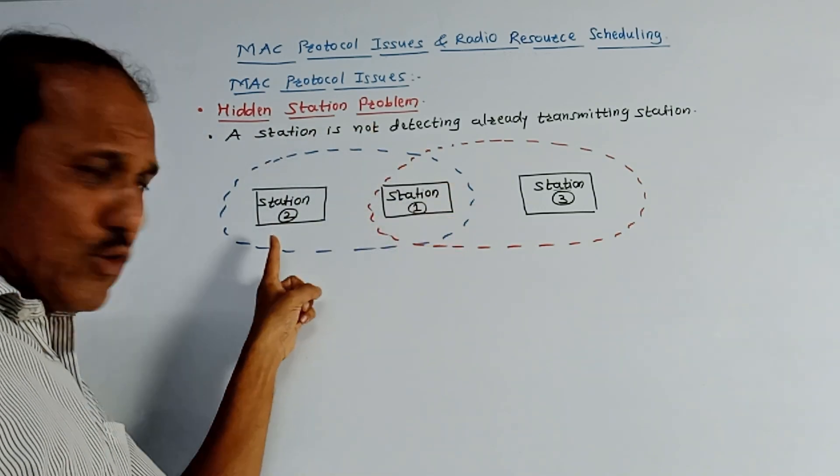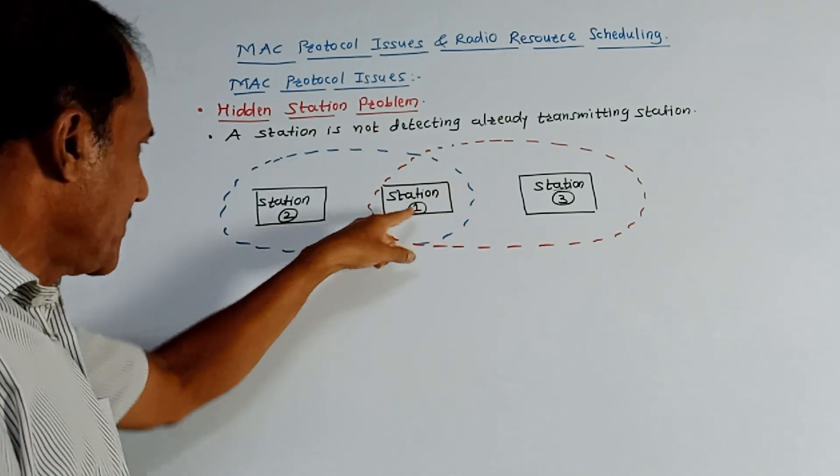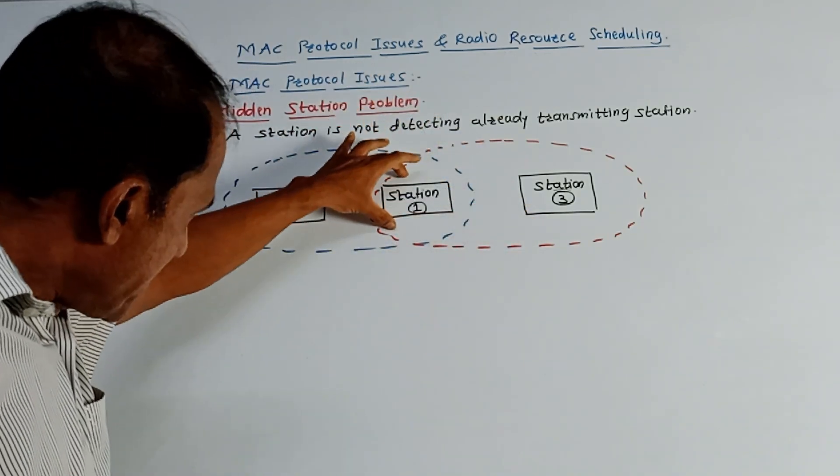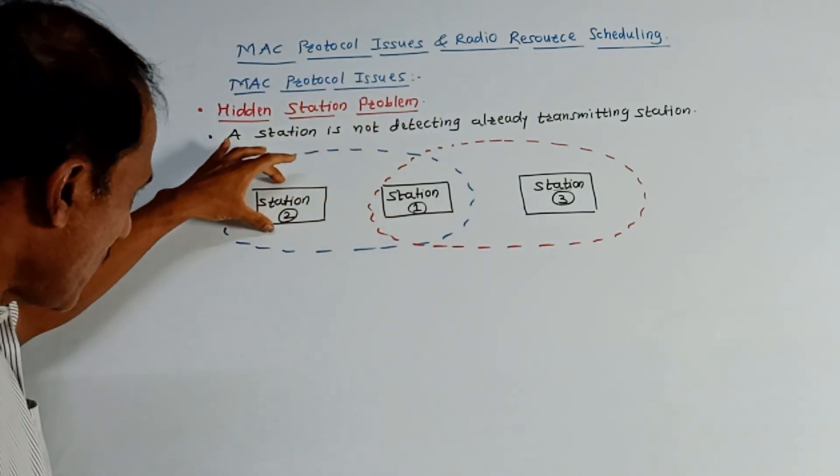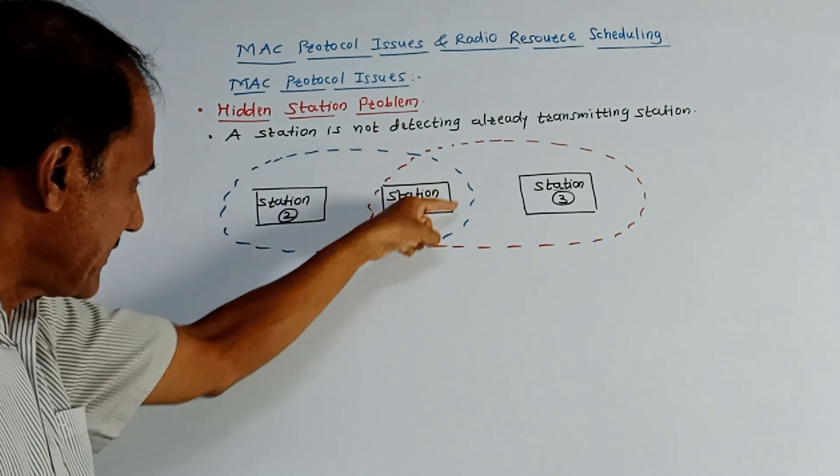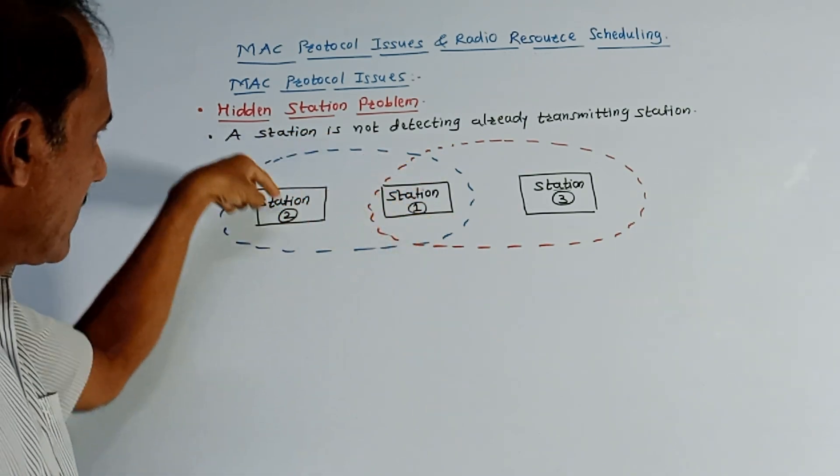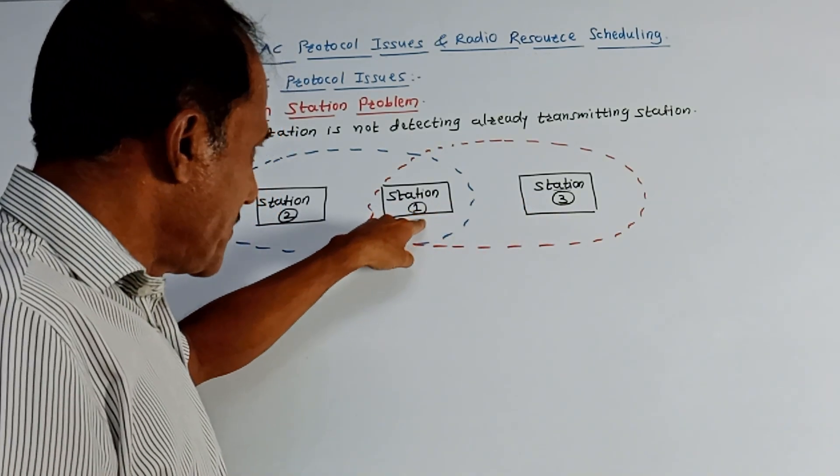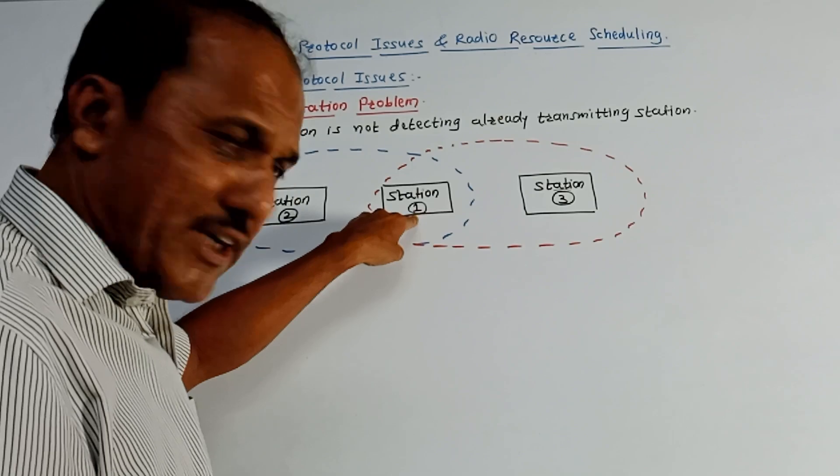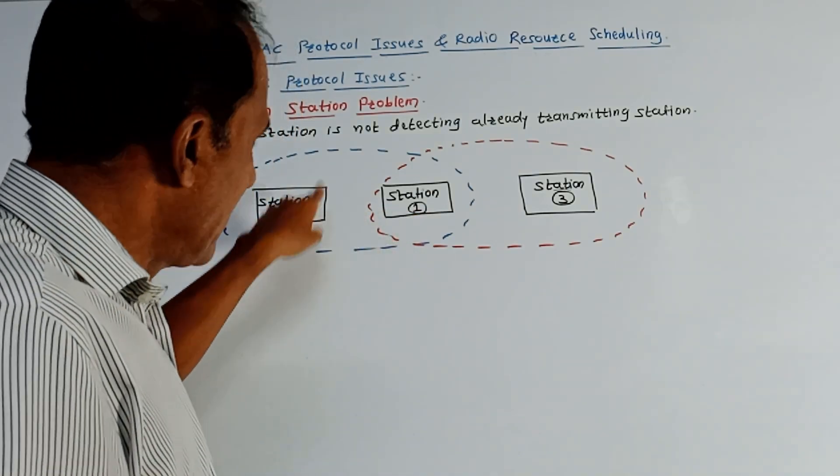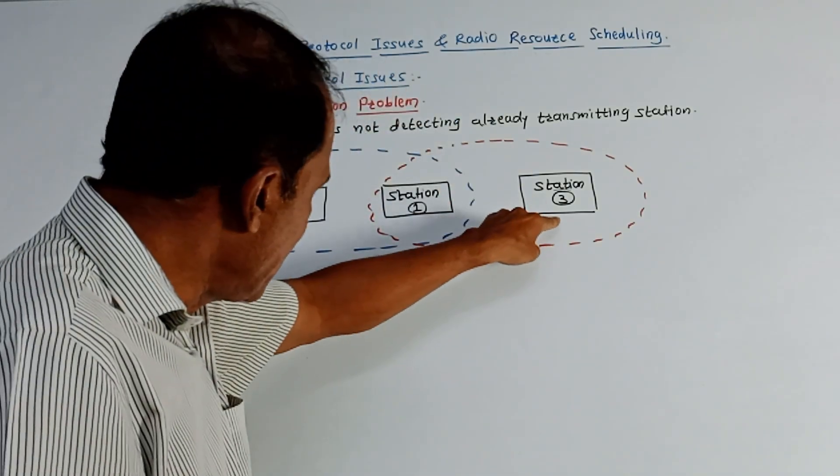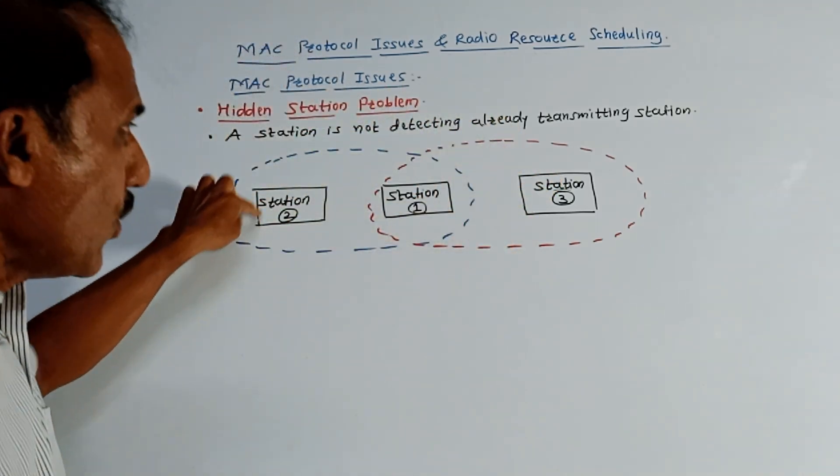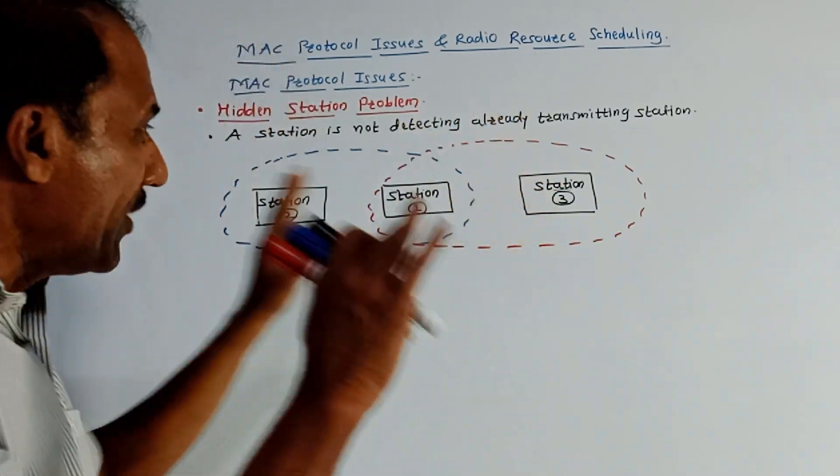Consider a situation. I have shown three stations: station 1, station 2, and station 3. Station 1 is in the range of station 2, which is shown by this oval-shaped graph. Station 3 is in the range of station 1. That means station 2 can communicate with station 1 and vice versa, as well as station 3 can communicate with station 1. But station 2 and station 3 are not in range.